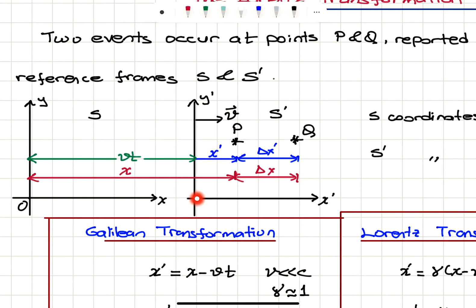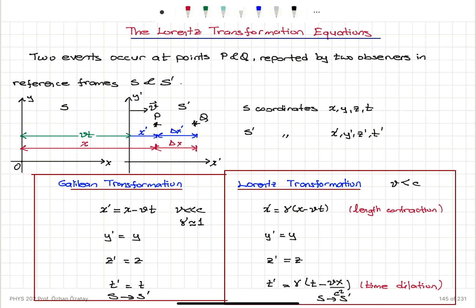At T equals 0, these two reference frames overlap, so the distance between the origins is V times T. S coordinates are X, Y, Z, T. S prime coordinates are X prime, Y prime, Z prime, T prime for the event at P.